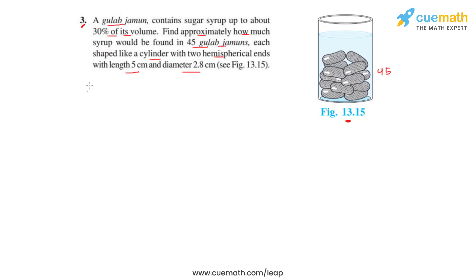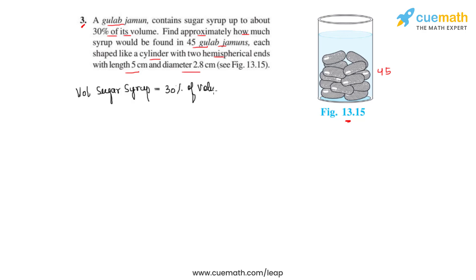From the very first statement, what we can write is: the volume of sugar syrup equals 30% of the volume of one gulab jamun.